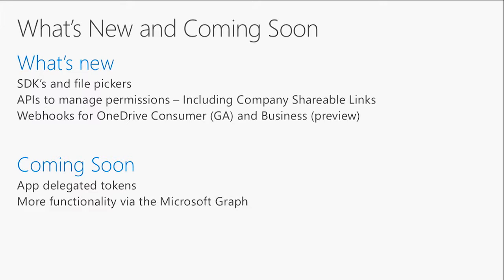Some of these features include APIs to help manage permissions — the ability to view, add, or delete user permissions in OneDrive for Business. Also, webhooks that allow your app to subscribe to changes in a user's OneDrive and be notified of those changes when they occur, instead of constantly polling our API or simply guessing when those changes may have occurred.